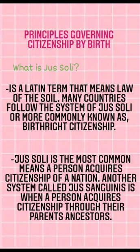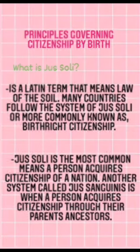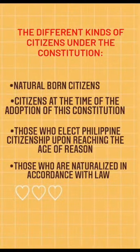Another system called Jus Sanguinis is when a person acquires citizenship through their parents and ancestors. So what are the different kinds of citizens under the constitution? First, natural born citizens. Second, citizens at the time of the adoption of this constitution. Third, those who elect Filipino citizenship upon reaching the age of reason.